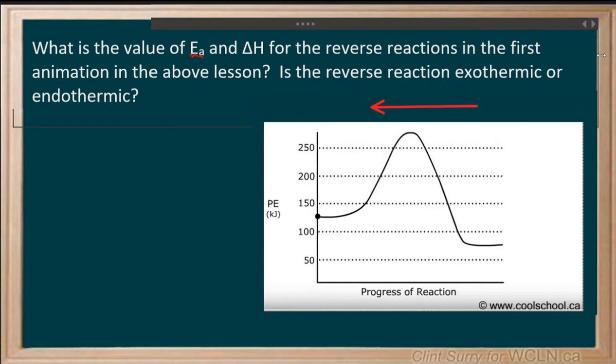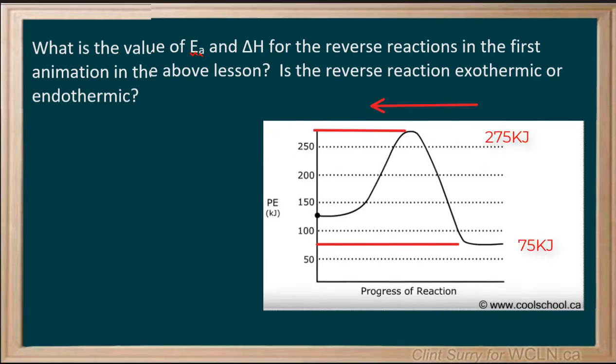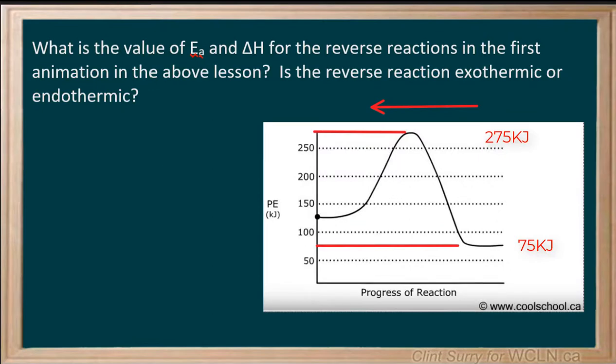Let's start off with the energy of activation. To find this, we look at where we start to the highest point on the graph. We can see that we are starting off at 75 kilojoules of energy and we end up at the top of the graph at 275 kilojoules of energy. Finding the difference between these two is 275 minus 75, leaving us with 200 kilojoules. That is our energy of activation for the reverse reaction.